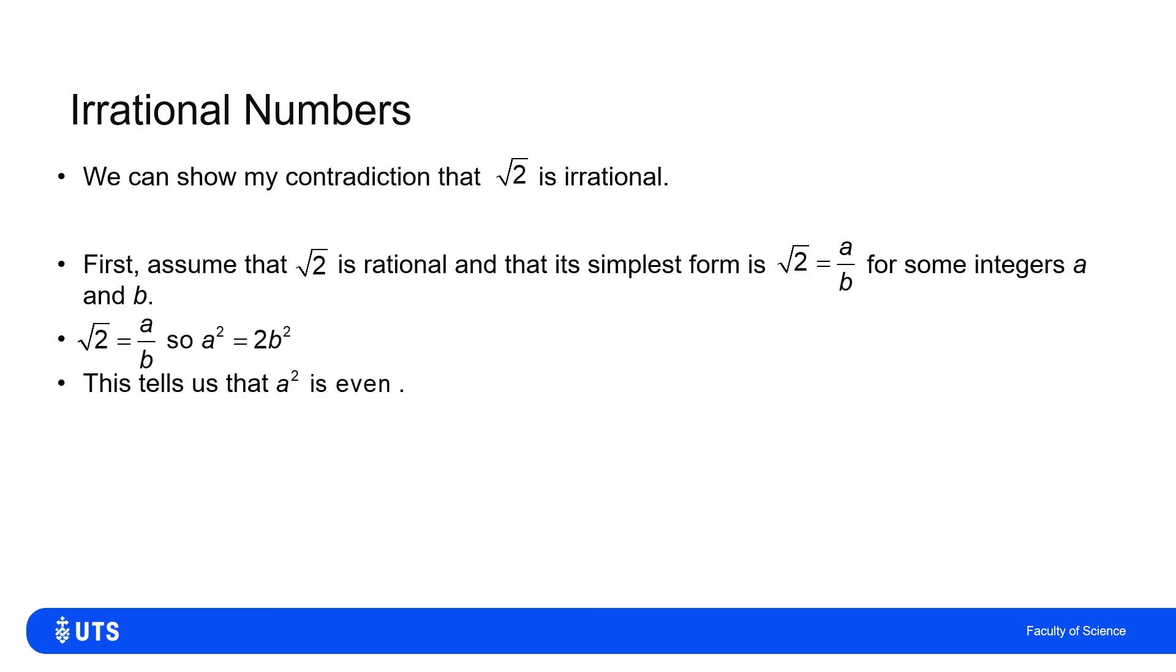Well, if A squared is two B squared, then two times an integer must be even. So A squared is even. We've already seen that if A squared is even, A must be even.